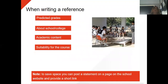So what to think about when writing the reference? Things to include in UCAS: the predicted grades will be in there, and a bit about your school or college. If you haven't got too much room to talk about your school or college, maybe you have a statement on your website where you can point the tutors to. Academic content and suitability for the course is important.